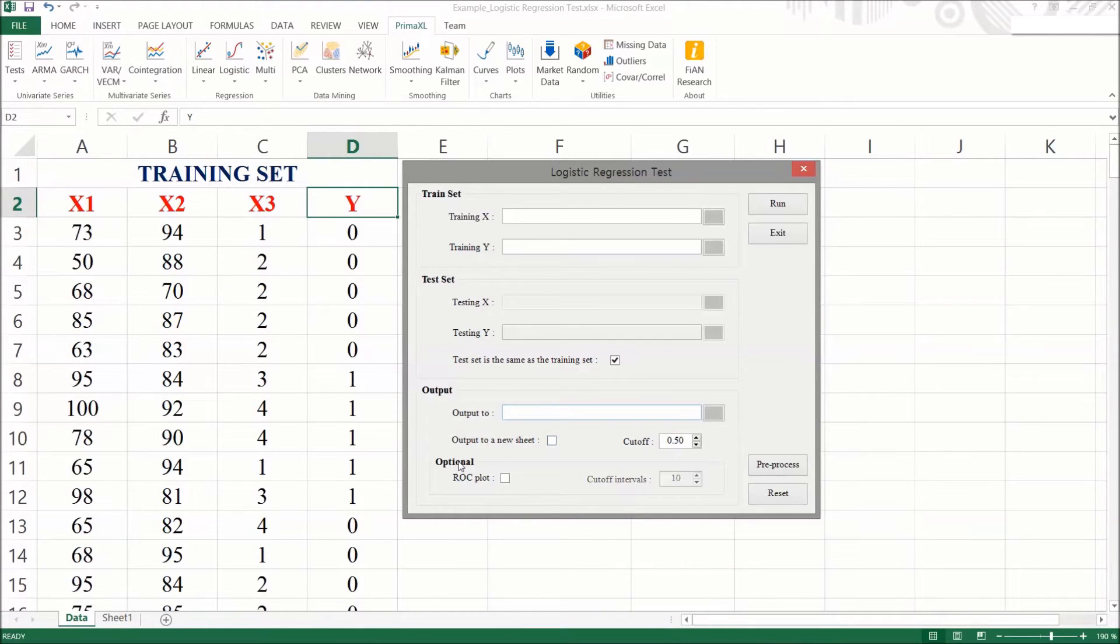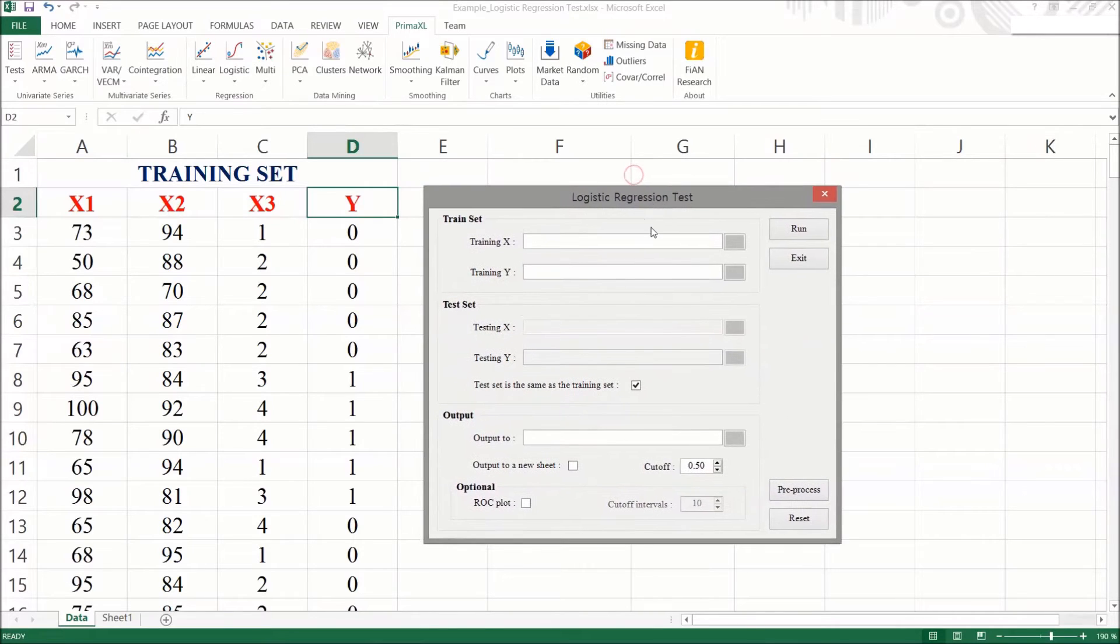Now, there's a very important detail. You see this number which is labeled cutoff? This number gives the probability threshold. Our forecast probability above this will be identified as 1, while below it will be identified as 0. For the time being, let's just leave its value at 0.5.